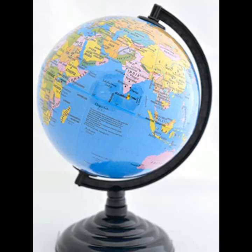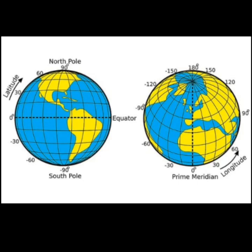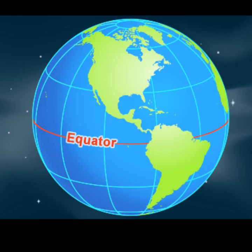Have you seen the globe? Globe is a three-dimensional model of our Earth. In the globe we can see so many lines. These lines are imaginary lines. An imaginary line running on the globe divides it into two equal parts — this line is called the equator.